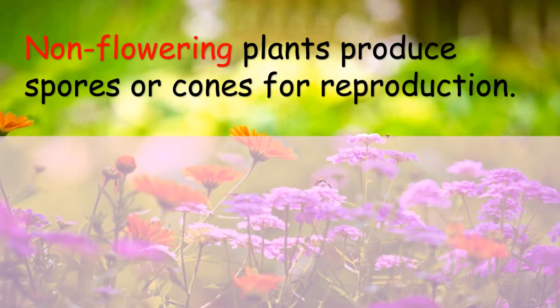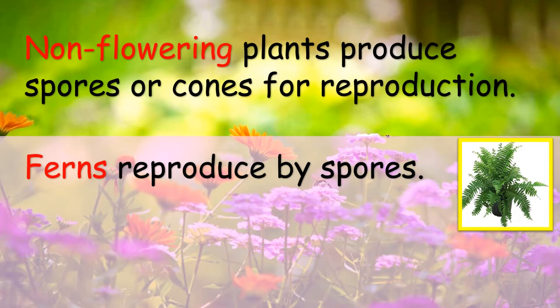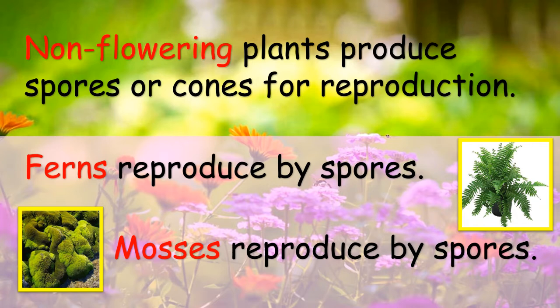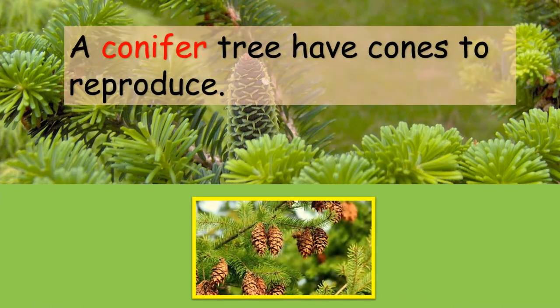Non-flowering plants produce spores or cones for reproduction. For example, ferns reproduce by spores in their leaves, and mosses reproduce by spores also. Conifer trees have cones to reproduce. Look at the picture, students — these are cones used to reproduce. Do you understand?